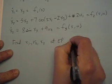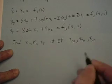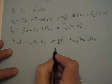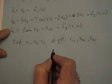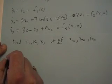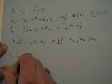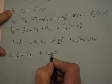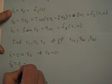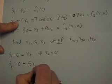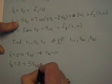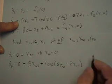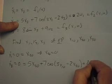We'll call the equilibrium values x1_0, x2_0, x3_0. At the equilibrium point, the system is sitting still and not moving, so all derivatives must be zero. Setting x1-dot equal to zero means x2_0 equals zero. Setting x2-dot equal to zero gives: 5x2_0 plus 7 cosine(3x1_0 minus 2x3_0) plus 2u1_0 equals zero, where we assume the inputs are zero at the equilibrium point. Setting x3-dot to zero gives: 8 sine(x3_0) plus 9u2_0 equals zero, and again the inputs are zero.